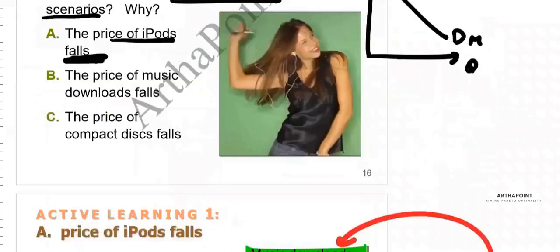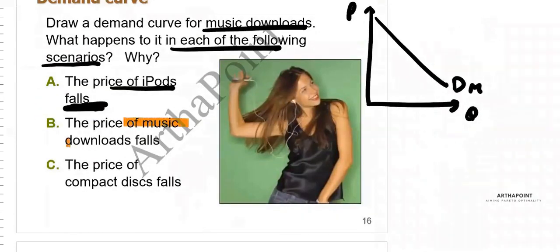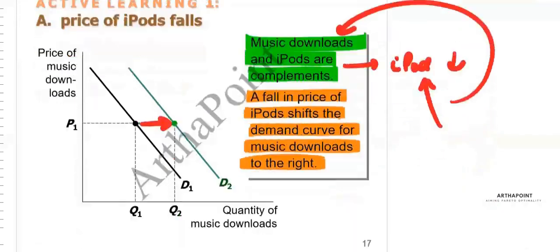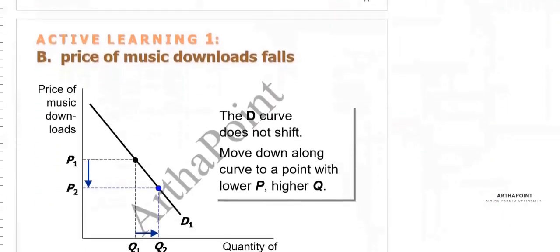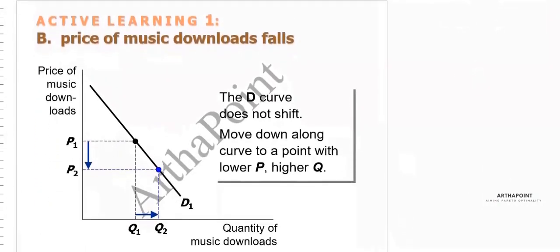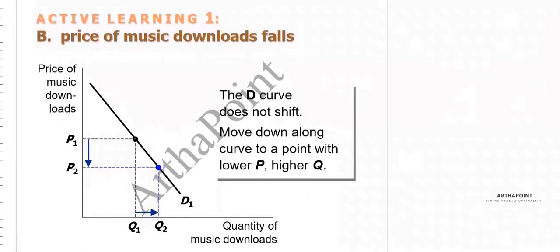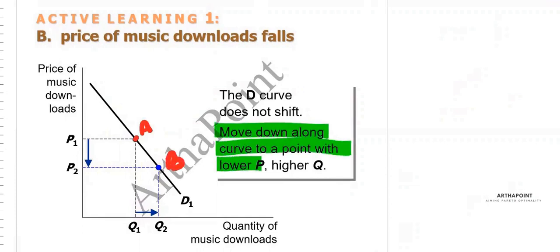Next: the price of music downloads itself falls. Suppose we are currently at point A. Since the price of music downloads is falling, we move to point B — this leads to a movement along the demand curve, from a point with a higher price to a point with lower price and higher quantity demanded.